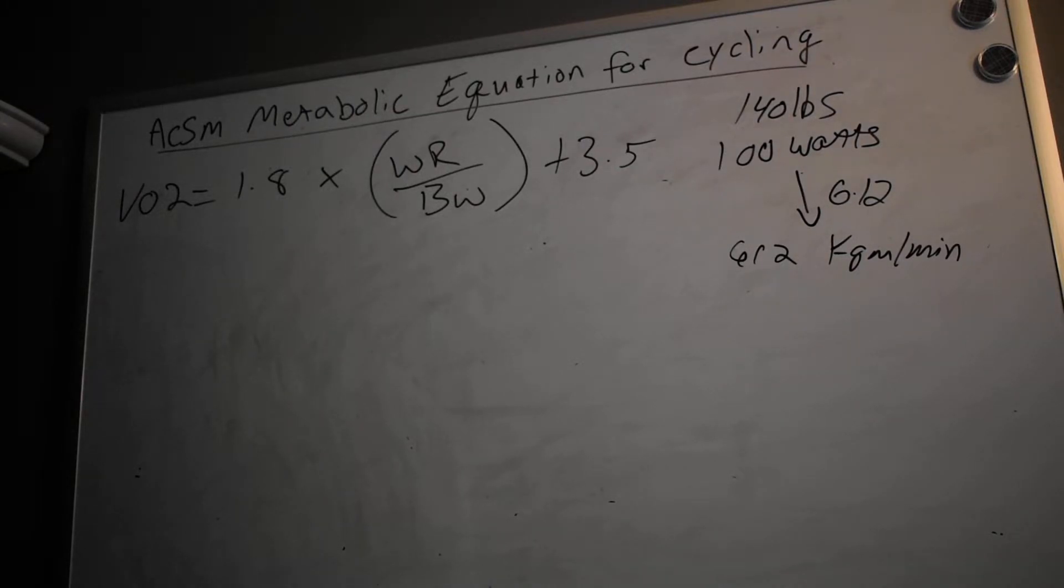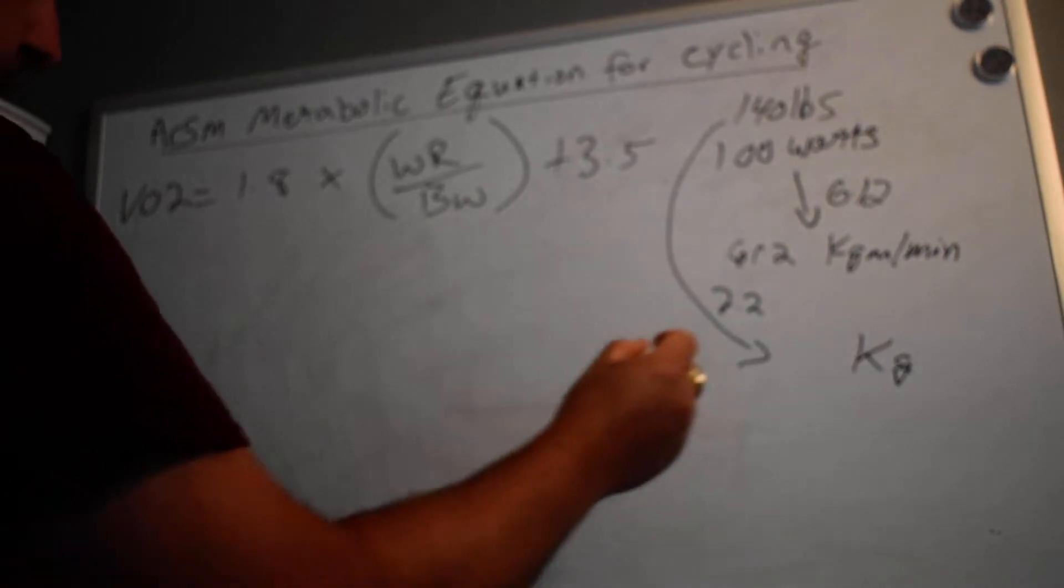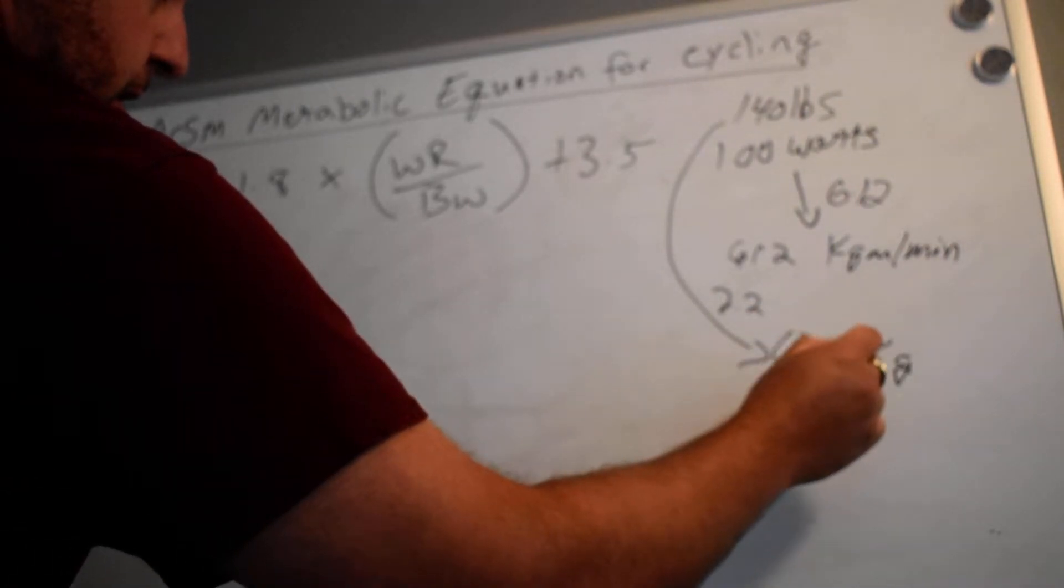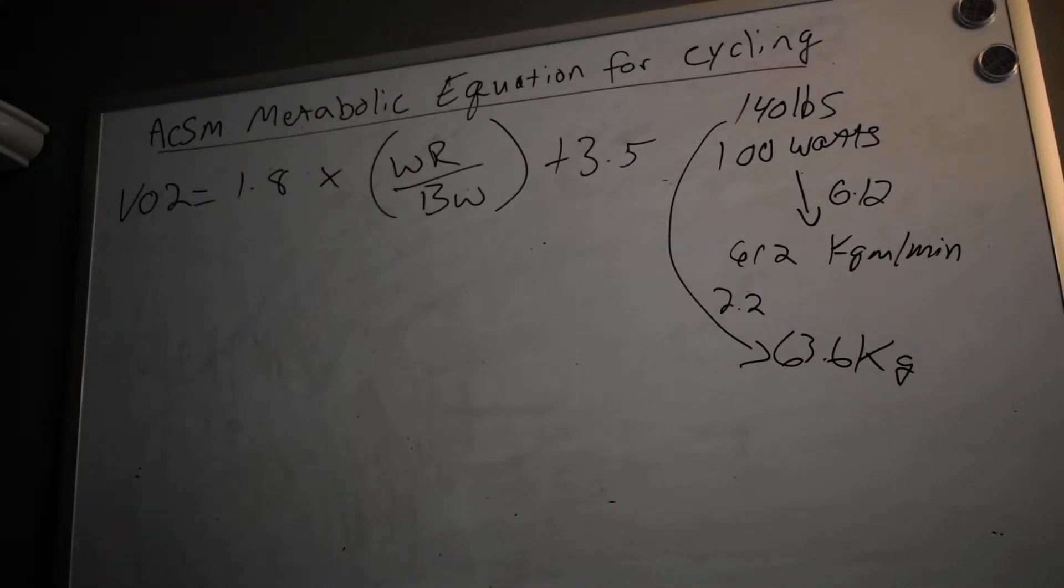I think this is a conversion that's a little bit more well-known. For pounds to kilograms it's 2.2. So we would take the weight in pounds divided by 2.2 and that would give us the weight in kilograms.